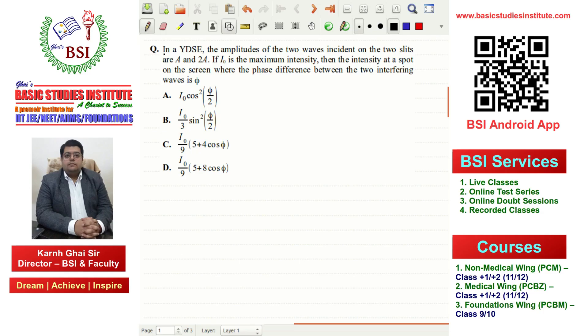Alright friends, this question is from YDSE, Young's Double Slit Experiment. We're given that the amplitudes of the two waves incident on the two slits are a and 2a.